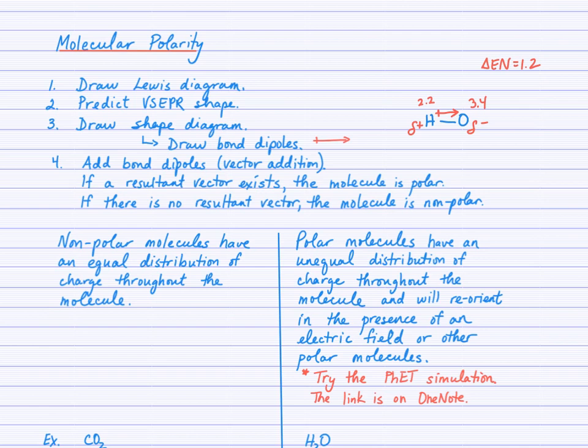So a non-polar bond, like hydrogen and hydrogen here, we would not be able to draw the vector or use the partially negative or partially positive symbolism. So moving along in the steps, we're going to then add the bond dipole, so look at vector addition. And if a resultant vector exists, then we will determine the molecule is polar. And if there's no resultant vector, then the molecule will be classified as non-polar.